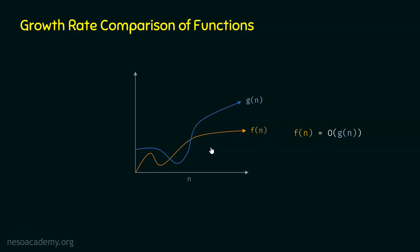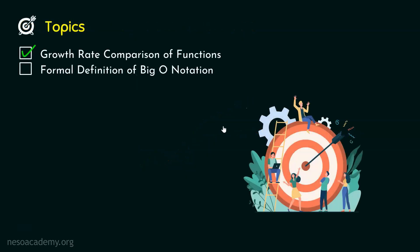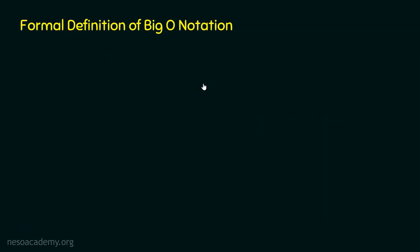Through this graph, we got to know what Big O Notation tells us. We compared the growth rates of these two functions. Now, let's move to the next topic where we will discuss the formal definition of Big O Notation.